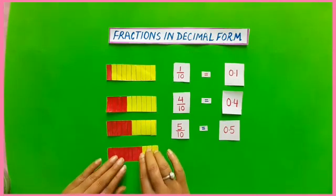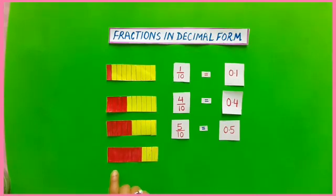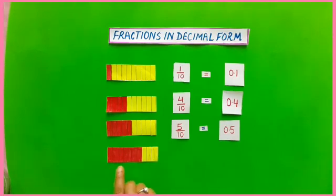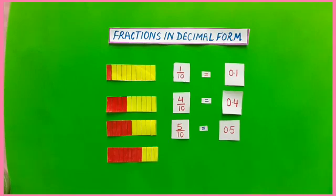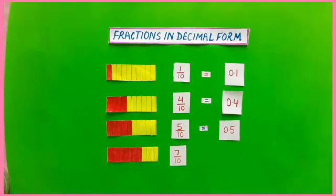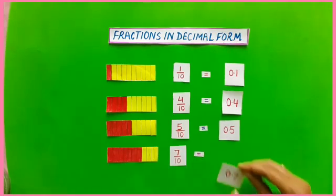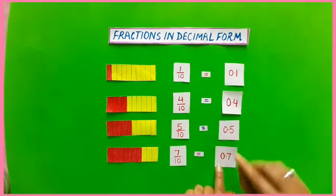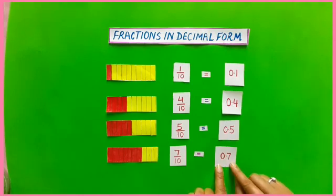Here is another example. There is a rectangle divided into 10 equal parts. Here, 7 parts are colored red. The fraction of the colored part is 7 by 10, and this is equal to its decimal form as 0.7.